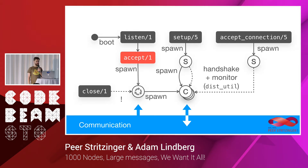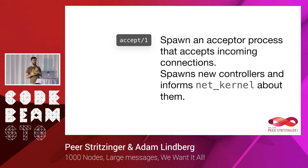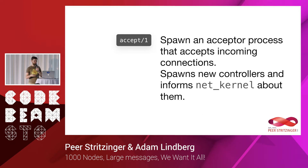Then the accept function is called. The responsibility of the accept function is to spawn an acceptor process or somehow start accepting incoming connections. This acceptor process in turn spawns new controllers and then informs NetKernel about them. So when someone tries to connect to your node — for example via a TCP socket in gen_tcp_dist — and you get incoming connections on the listen socket, we need to tell NetKernel that a new node is trying to connect.